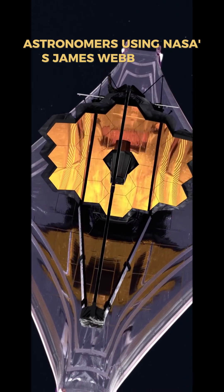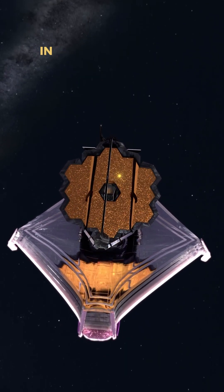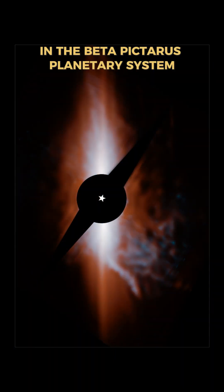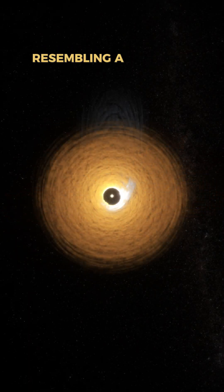Astronomers using NASA's James Webb Space Telescope have made an unprecedented discovery in the Beta Pictoris planetary system. Located just 63 light-years away, they have identified a unique structure resembling a cat's tail.